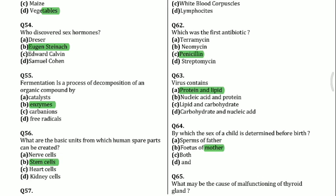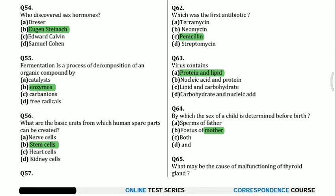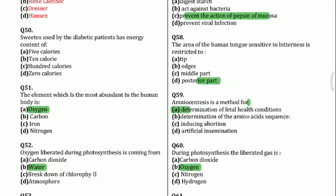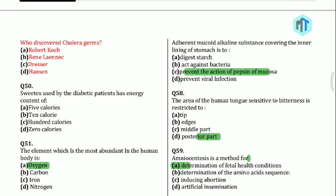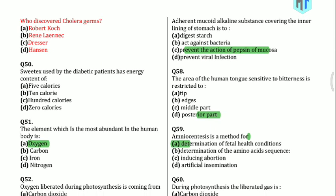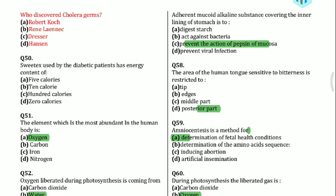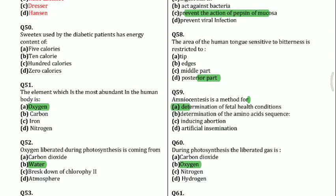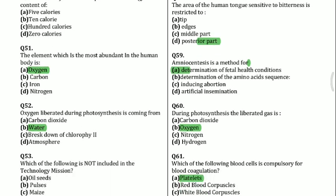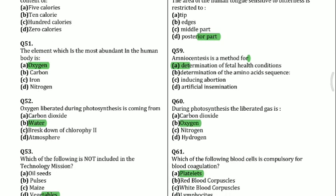Question 56: What are the basic units from which human sphere first can be created? Stem cells. Question 57: The header and mucoid alkaline substance covering the inner lining of the stomach is to prevent the action of pepsin — mucus. Question 58: The area of the human tongue sensitive to bitterness is restricted to the posterior part. Question 59: Amniocentesis is a method for determination of fatal health conditions.